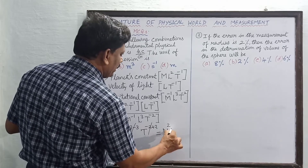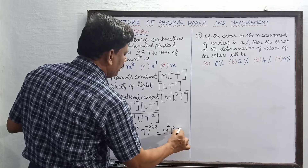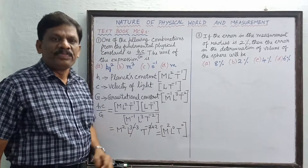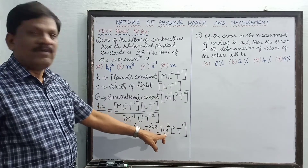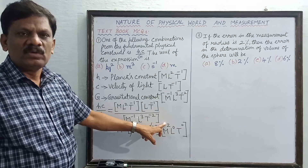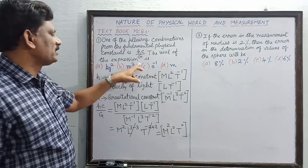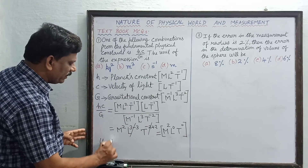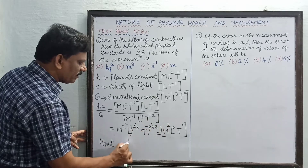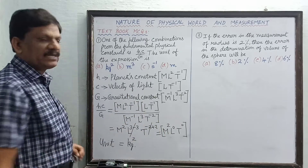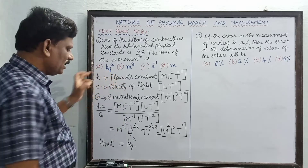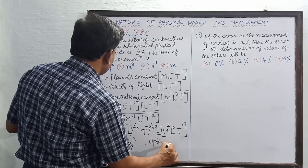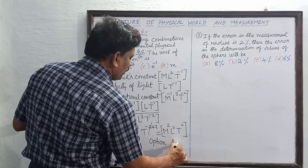The resulting dimensional formula is M² L⁰ T⁰, which is the dimension of mass squared. Therefore, the corresponding unit must be kilogram squared (kg²). Looking at the four options, the first option is correct — option A is the answer.